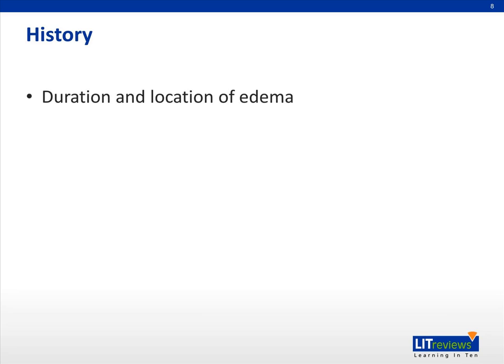During history taking, it is important to ask about the duration and location of the edema. Long-standing edema is likely to be due to chronic, progressive conditions, such as cardiac failure and renal failure. Whereas edema of sudden onset may point to potential life-threatening causes, such as anaphylaxis or sepsis, that require early medical attention. The location of edema can also be categorized into localized or generalized edema.